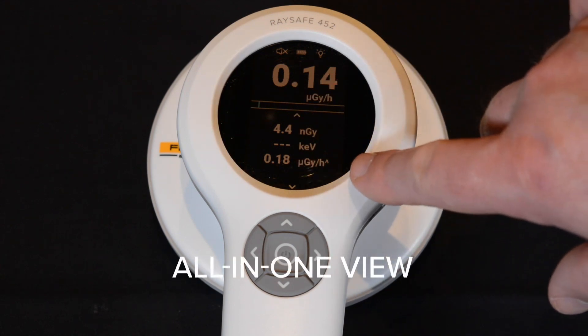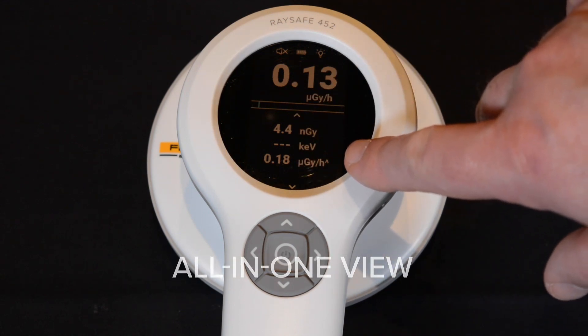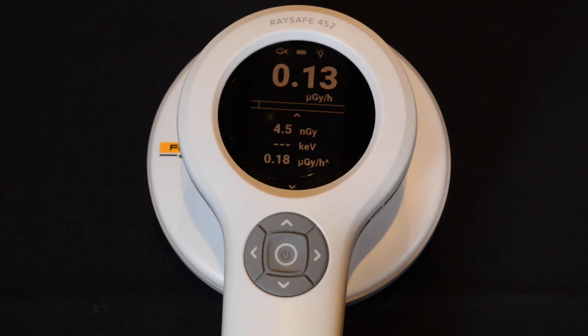When using other instruments, you might have several modes, but with the 452, you have everything all in one. There is no need to select anything. It's all automatic.